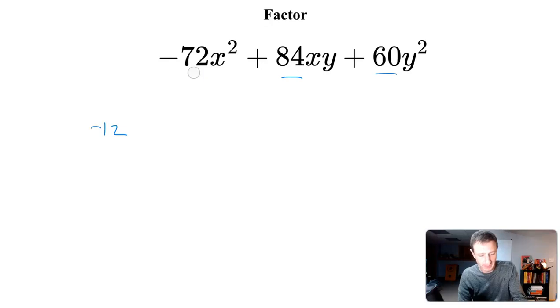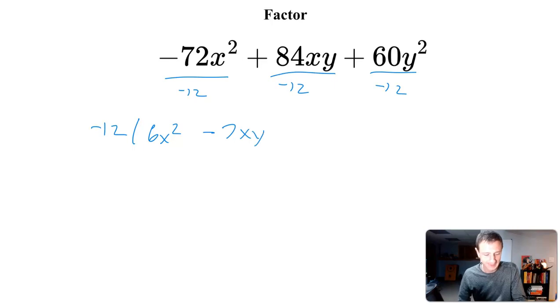So I can take out a -12 from all three terms. When I take out that GCF, I want to divide each term by what I'm factoring out. -72 divided by -12 is positive 6x². Then 84 divided by -12 is -7 because we're doing positive divided by negative, so -7xy. And 60 divided by -12 is -5, so -5y² because we did positive divided by negative.